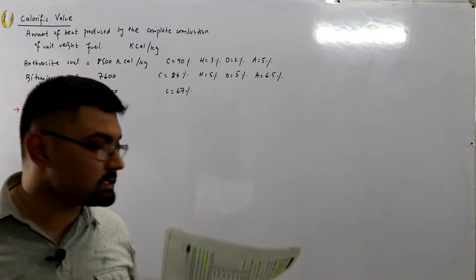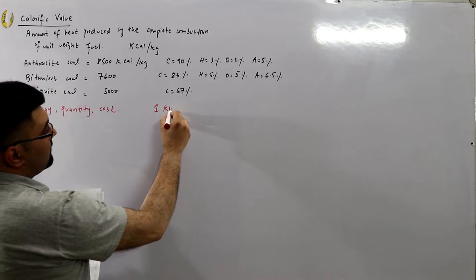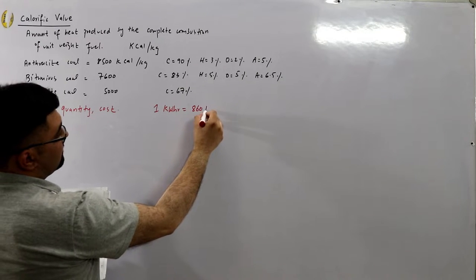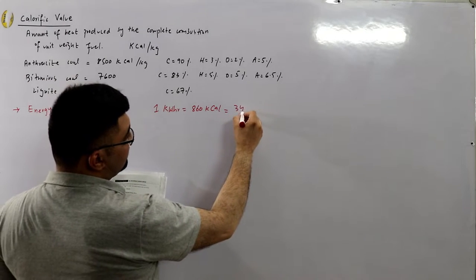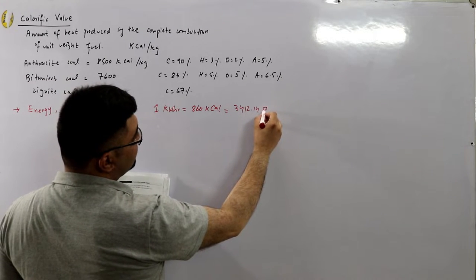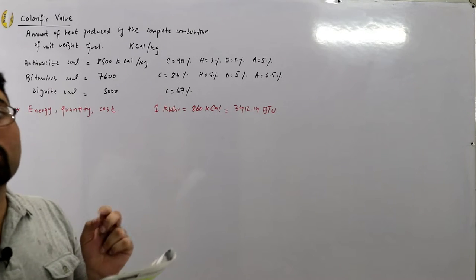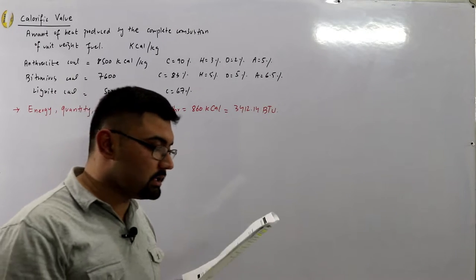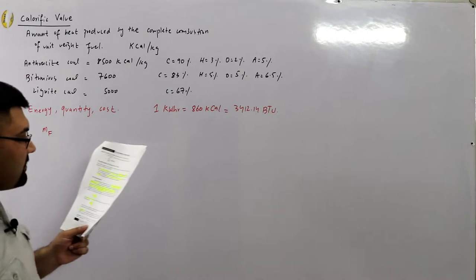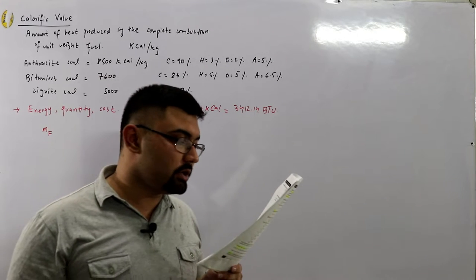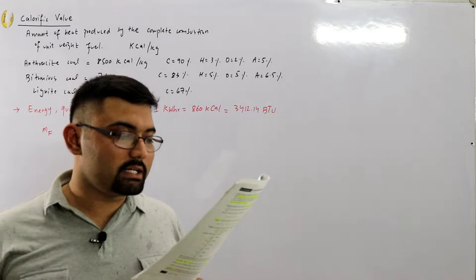The heat energy equivalent of one kilowatt hour of electrical energy is 860 kilocalories, which is 3412.14 British thermal units. The quantity of fuel, represented by mf (mass of fuel), can be determined by knowing the energy content of the coal in kilocalories per kilogram — that is, the calorific value or higher heating value.